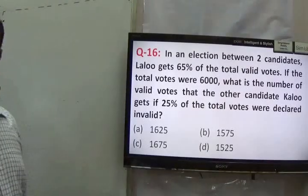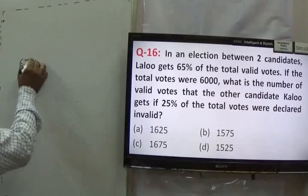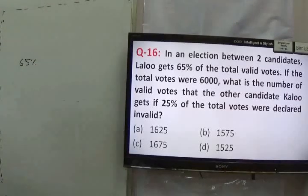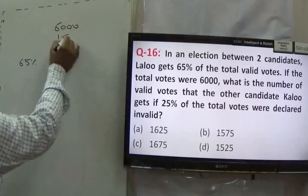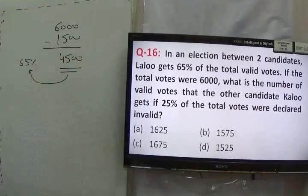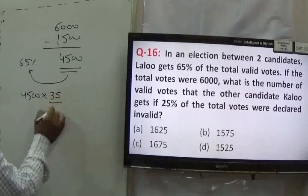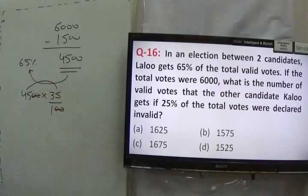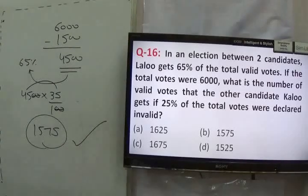Statement number 16. In an election between two candidates, Lalu gets 65% of total valid votes. Find the number of votes the other candidate Kalu gets if 25% of total votes were declared invalid and total votes were 6000. Invalid votes: 25% of 6000 = 1500. Valid votes: 4500. Lalu gets 65%, so Kalu gets 35% of 4500 = 4500 × 35/100 = 1575. The number of votes received by Kalu is 1575.